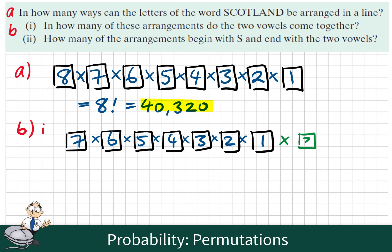Or if you wish, do we have two choices for the vowel in the first position, and one choice in the next position? So the solution to this question is 7 factorial multiplied by 2 factorial, or 7 factorial multiplied by 2. So again, we take out the calculator, and the solution to this is 10,080.